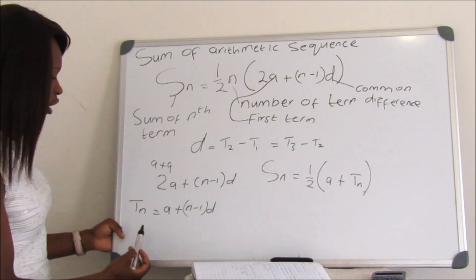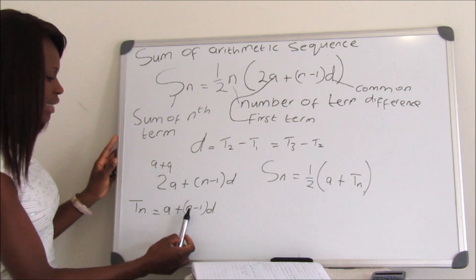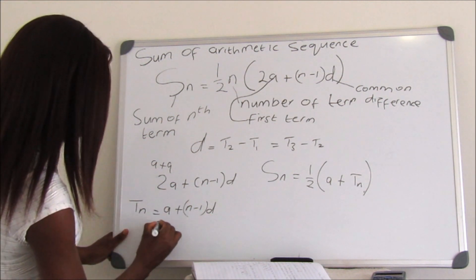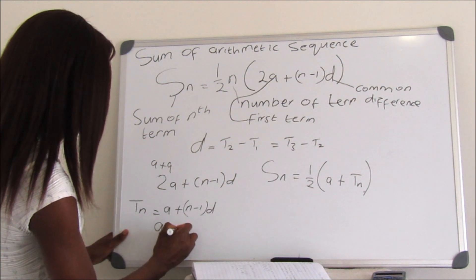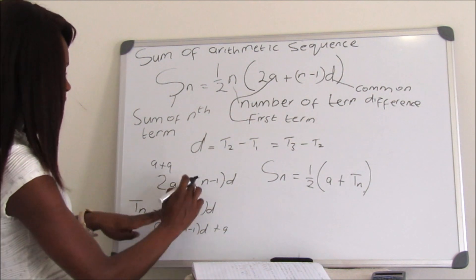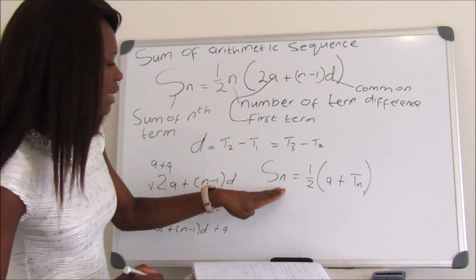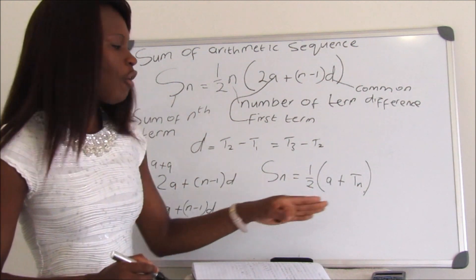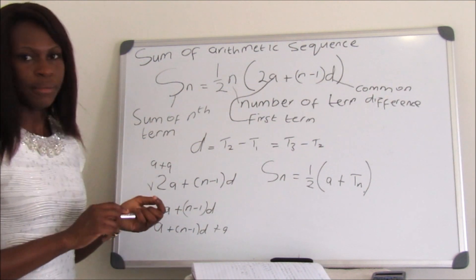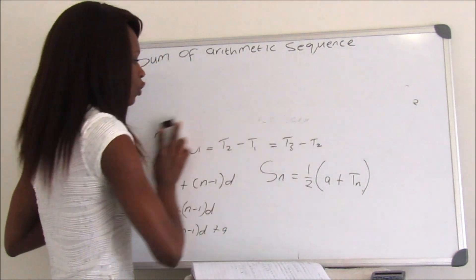Remember from our previous session, the nth term is tn = a + (n−1) × d. If I add a to tn, it gives a + (n−1)d + a, which is 2a + (n−1)d — the same as before. So the sum of an arithmetic sequence can be written as Sn = (1/2)n × (a + tn), where tn = a + (n−1) × d. Let's do one example so you understand how to use this equation.